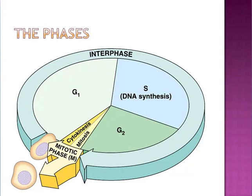The phases of the cell cycle are G1, S, G2, M, and C phase. G1 stands for Gap 1, S for the synthesis phase, G2 for Gap 2, M for mitosis, and C for cytokinesis.